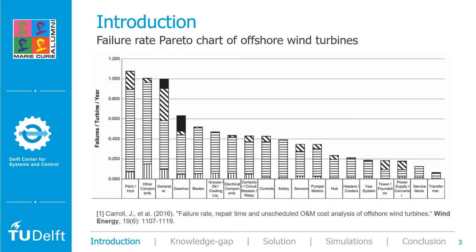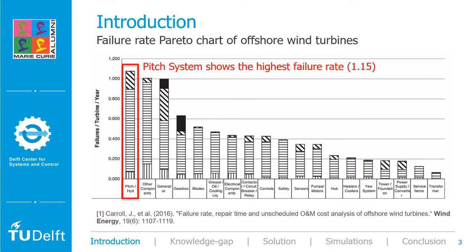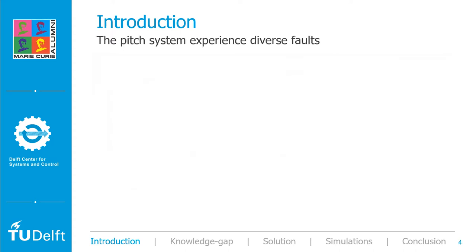For example, this figure shows the failure rate of different components of offshore wind turbines. The X axis shows the main components of the wind turbine, such as pitch control system, generator, gearbox, blades, and so on. The Y axis shows the failure number per turbine per year. We can see that the pitch control system has the highest failure rate, namely 1.15, among the components of wind turbines. Such a high failure rate is caused by various faults of the pitch control system due to the extreme and continuous environmental loads.